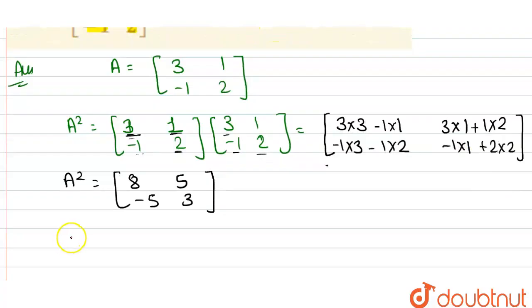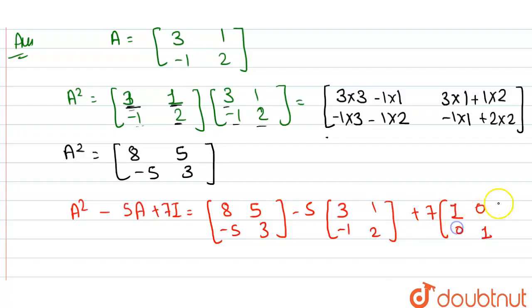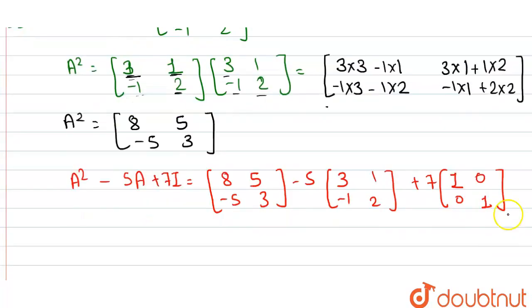Now put the values in A squared minus 5A plus 7I, where I is the identity matrix. So A squared matrix value is 8, 5, minus 5, 3, minus 5 times matrix A which is 3, 1, minus 1, 2, plus 7I. Because I is the identity matrix, diagonal elements are 1 and off-diagonal elements are 0.